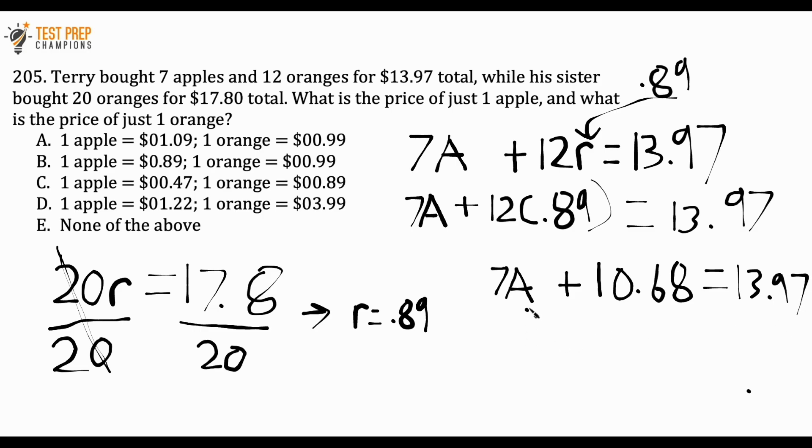The goal here is we want to get the A by itself. Once we do that, that's going to tell us the price of just one apple. What I want to do now is subtract 10.68 from both sides. When I do that, that's going to get me one step closer to finding the answer. In my calculator, if I do 13.97 minus 10.68, I get 3.29. So I have 7A equals 3.29.